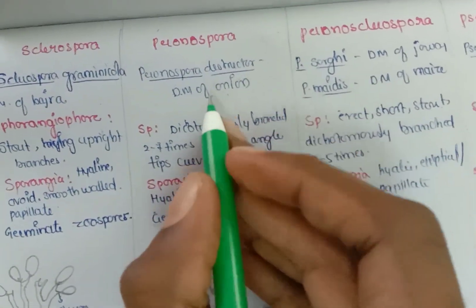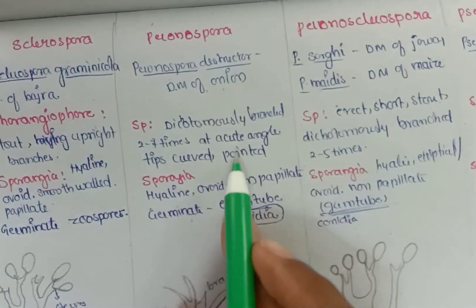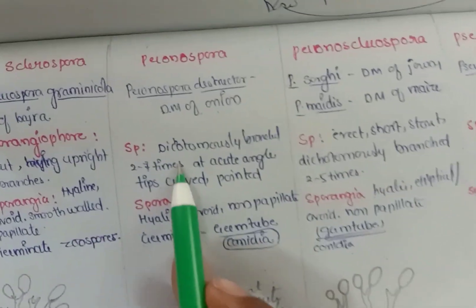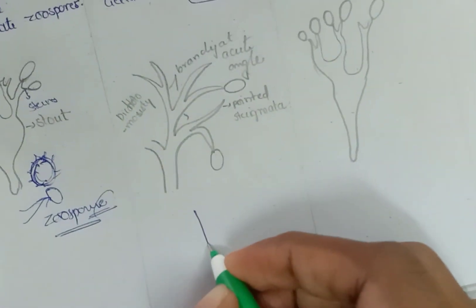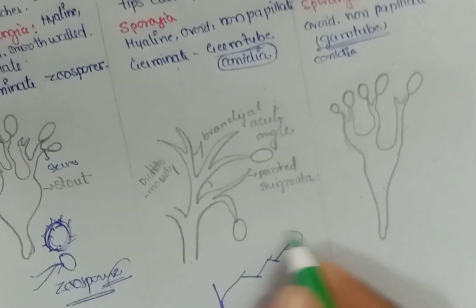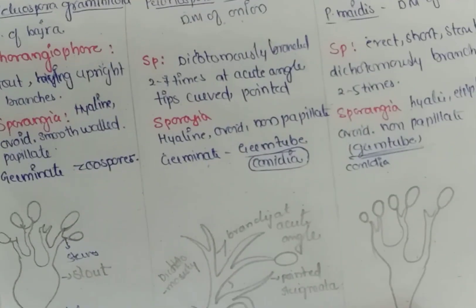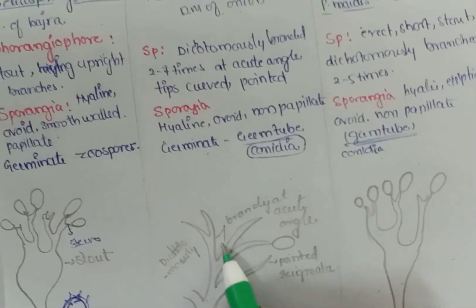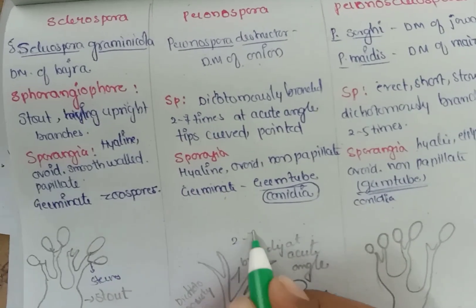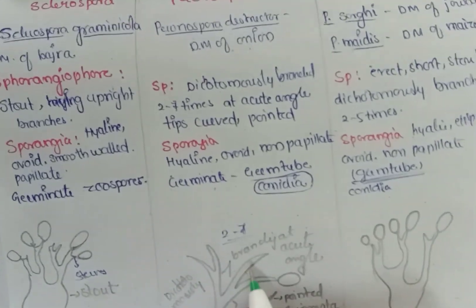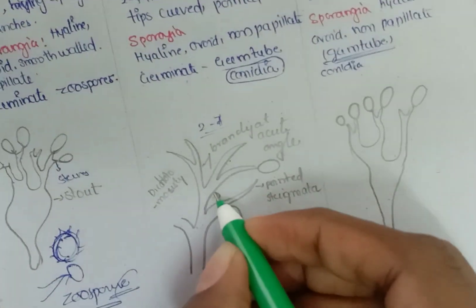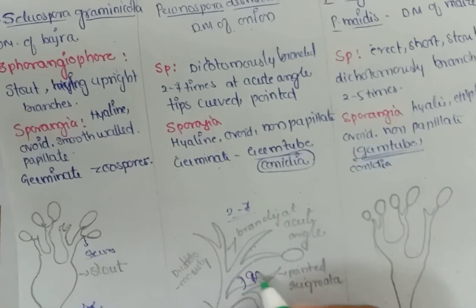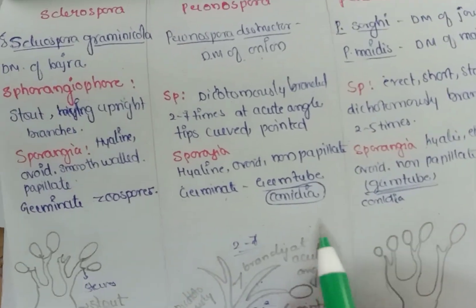The next genus is Peronospora destructor — the Downy Mildew of Onion. The sporangiophore is dichotomously branched, meaning one branch divides into two, then two again, and so on — up to two to seven times. The branching occurs at an acute angle, less than 90 degrees.